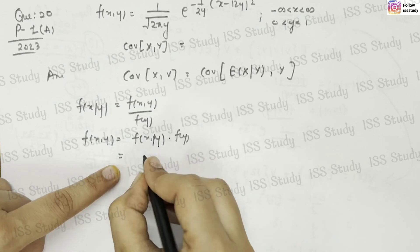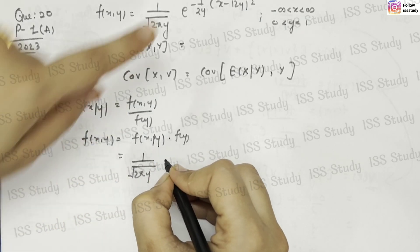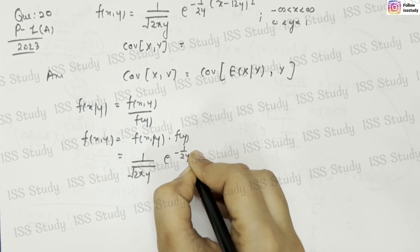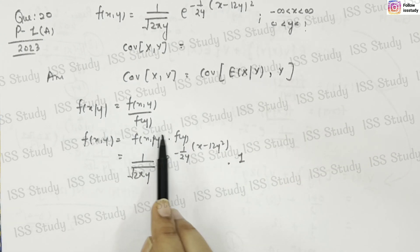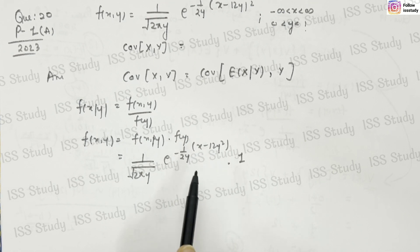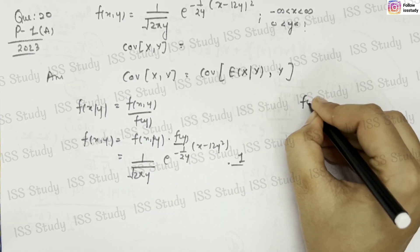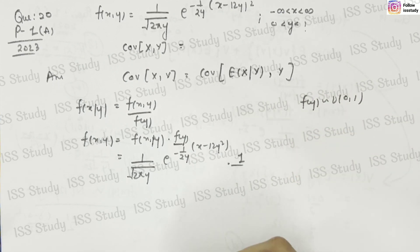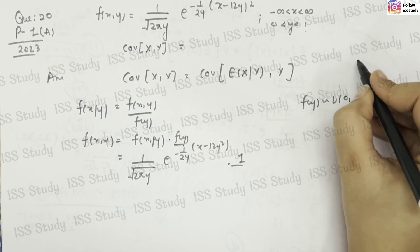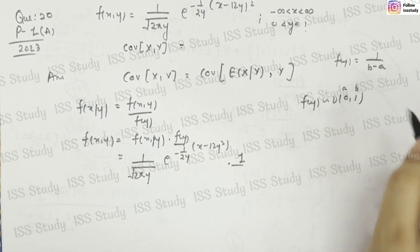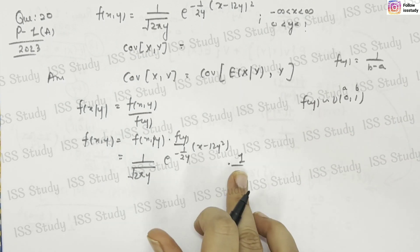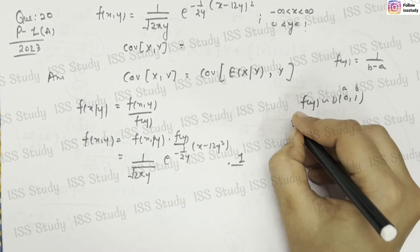Writing the value as it is: 1 upon root(2π y) times e to the power minus 1/(2y) times (x minus 12y) squared, multiplied by 1 for f(y). I am putting 1 here because the range of y goes from 0 to 1, so f(y) follows the uniform distribution with parameters 0 and 1. Using the PDF formula for uniform distribution, which is 1 upon (b minus a), with a=0 and b=1, we get b minus a equals 1.